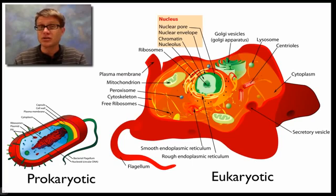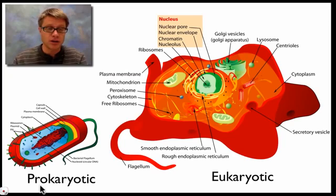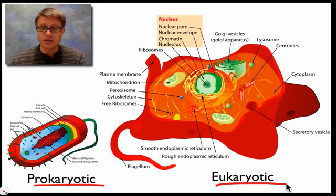First thing you should know is there are two major types of cells. We have what are called prokaryotic cells and then eukaryotic cells. Prokaryotic cells are going to lack a nucleus. They're before the egg if we break down that word. So there's going to be no nucleus. Eukaryotic cells are going to have a nucleus.